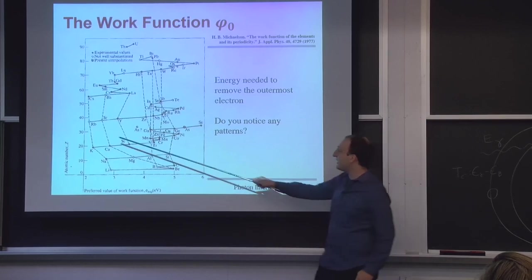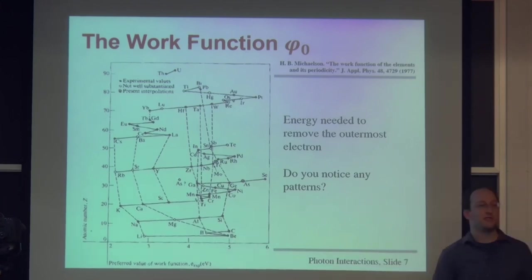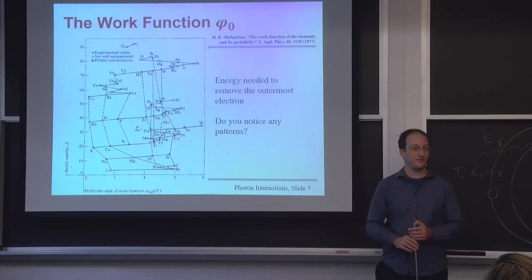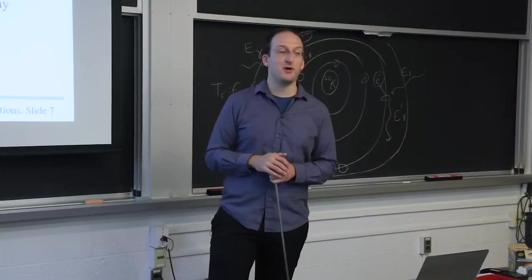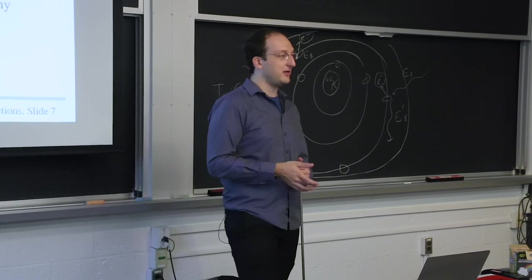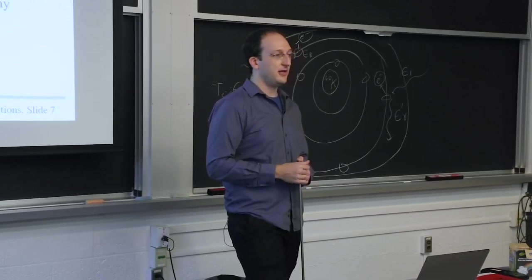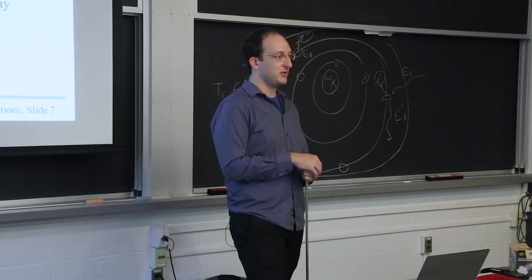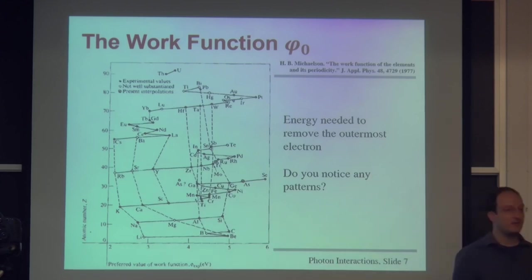Work functions tend to increase with decreasing Z because for smaller Z, the outermost electron is much closer to the nucleus and more tightly bound — even though the total nuclear charge is lower, proximity matters more. The outermost electron in cesium is quite far away and does not feel as much Coulomb attraction.